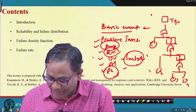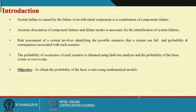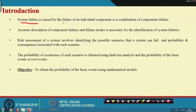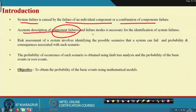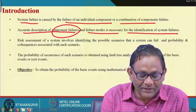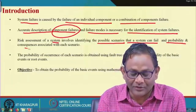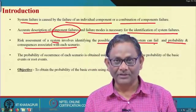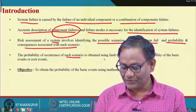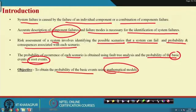System failure is caused by failure of individual components or combinations. Accurate description of component failure or failure modes is necessary for identification of system failures. Risk assessment involves identifying possible accident scenarios — the system can fail — and determining probability and consequences at each scenario. The probability of occurrence of each scenario is obtained using fault tree analysis and probability of the basic or root events. Our objective is to find out the probability of basic events using mathematical models.